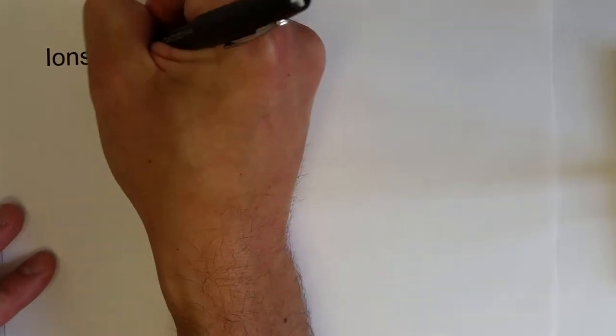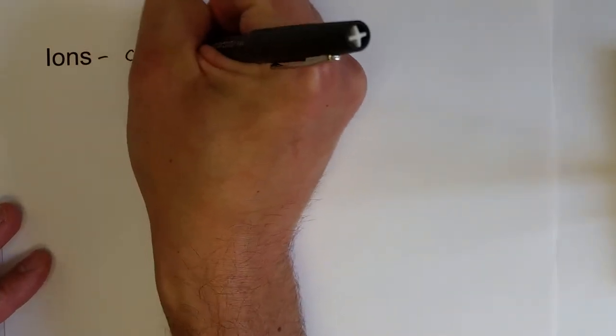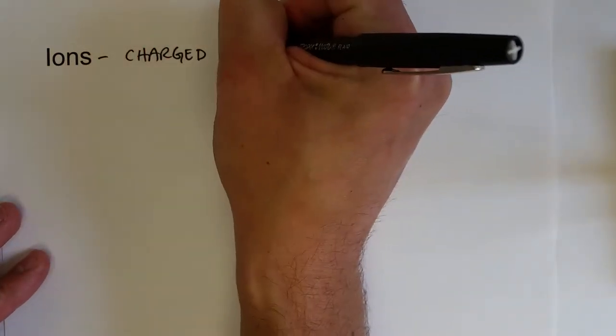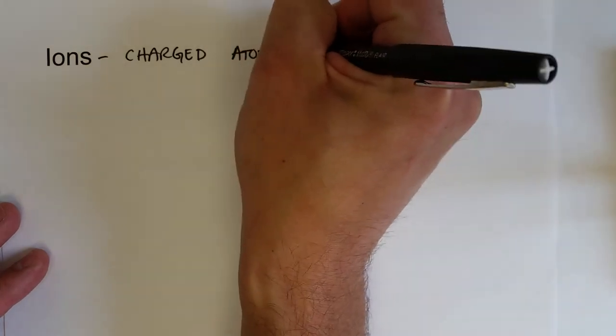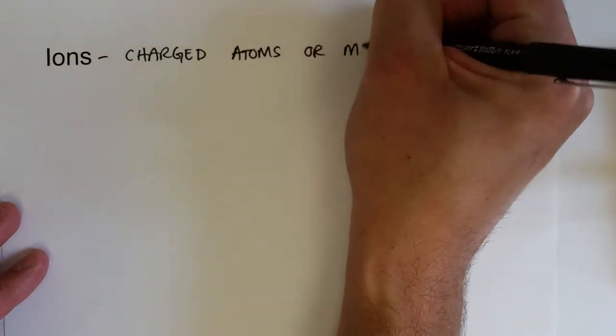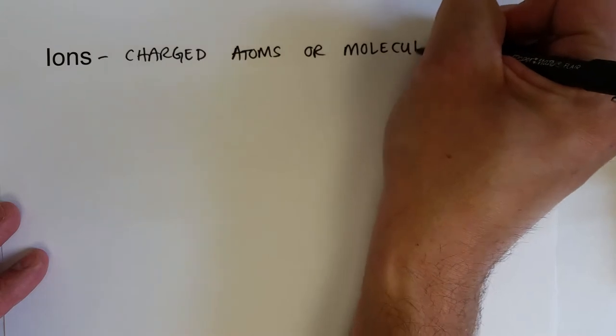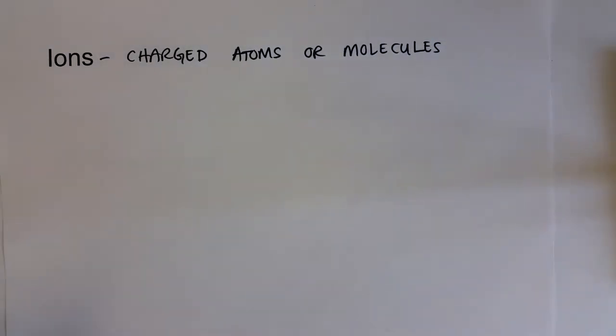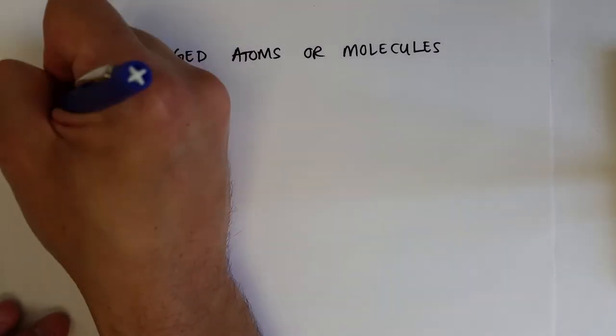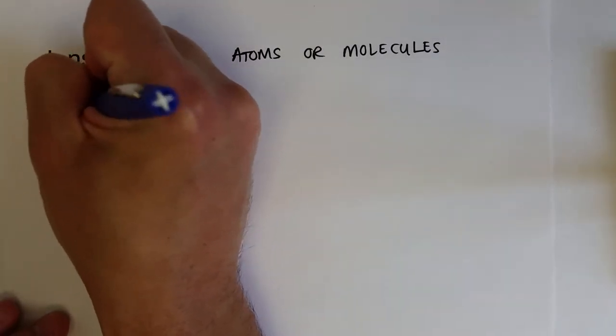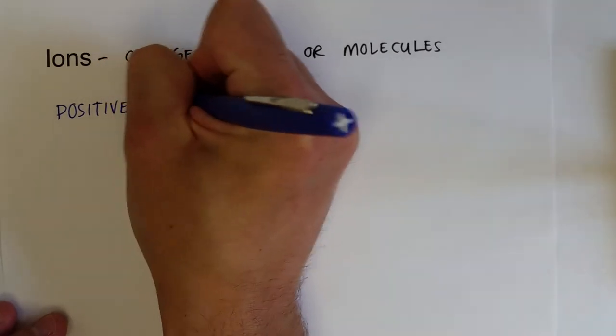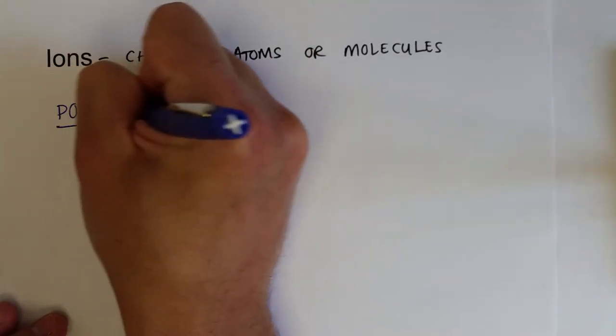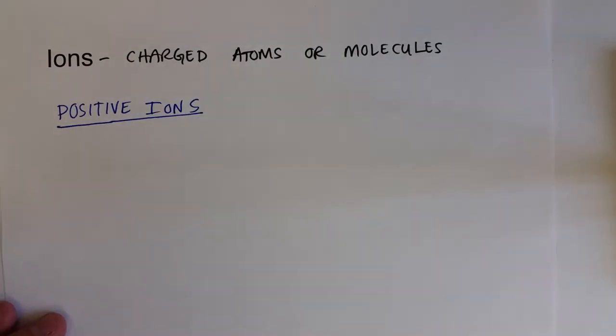All right, so now that we know what ions are, they are charged atoms or molecules. And the two types, of course, you can either have positive ions or negative ions.